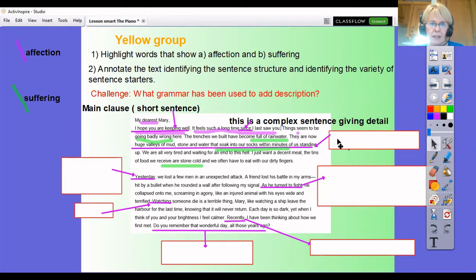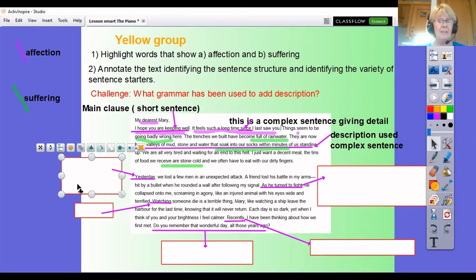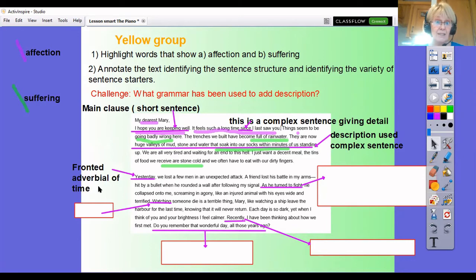So here let's move on. Here I'm looking at this sentence now, there are now huge valleys of mud stone and water that soak our into our socks in minutes of standing up. Lots and lots of description there. Now the clue is if you're not sure there'll be lots of description, you have got commas in here to break up your clauses and to separate your list of nouns here, mud stone and water that soak into our socks in minutes of standing up. So that is a clue that's saying it's a complex sentence. If you see lots of description used within it and there's commas within that sentence, you know it's going to be a complex sentence.